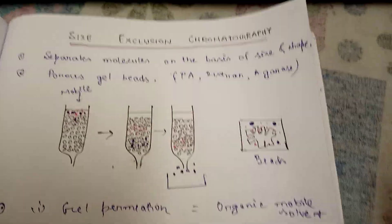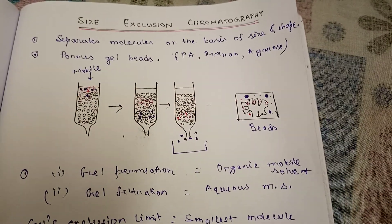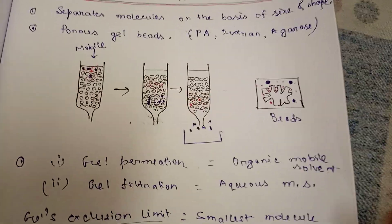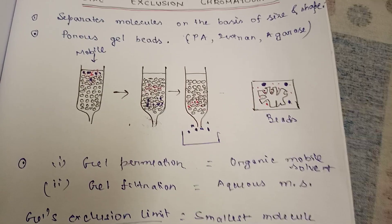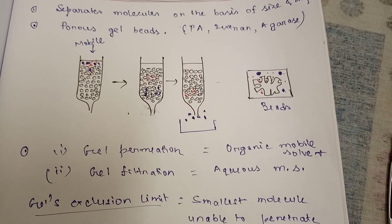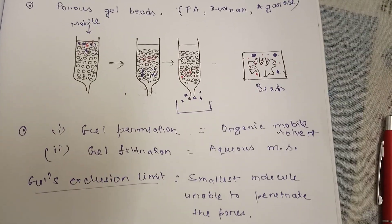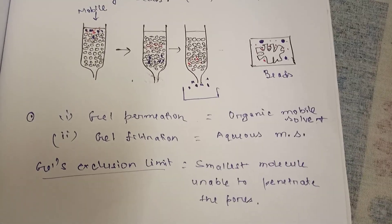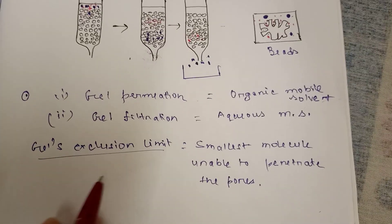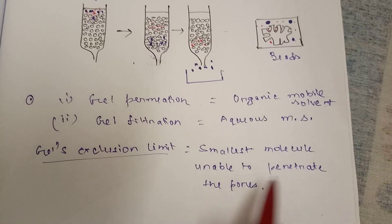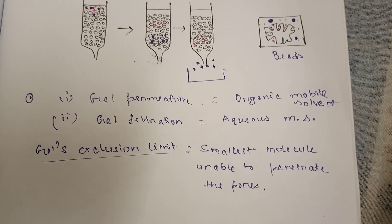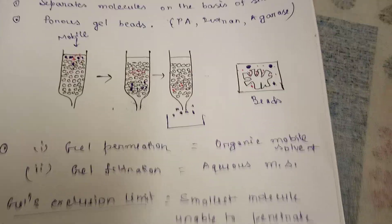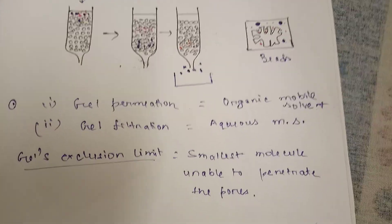So the idea of size exclusion chromatography is that it separates molecules on the basis of size and shape — bigger ones elute fast and smaller ones elute late, giving us different proteins at different times. It can be of two types: gel permeation and gel filtration. The gel exclusion limit is defined by the smallest molecule unable to penetrate the pores. Hope you understood — see you in the next video, thank you.